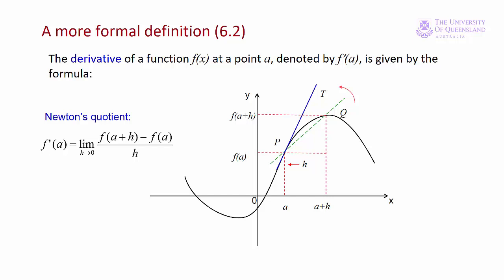Here we have the formal definition of the first derivative of a function — it's called the Newton quotient. Newton got his name on the quotient but we mostly use Leibniz notation. Basically it's the slope formula where we take the limit as h approaches zero. Another way we could think of that is: dy/dx equals delta y / delta x, but the limit as delta x approaches zero.